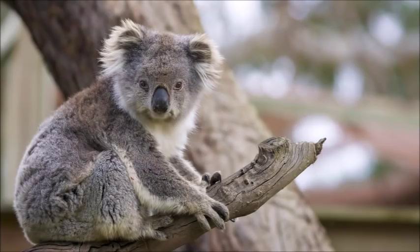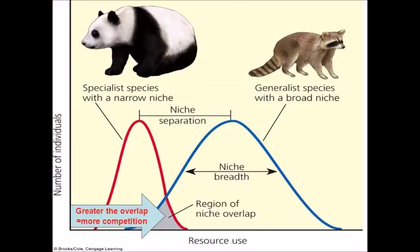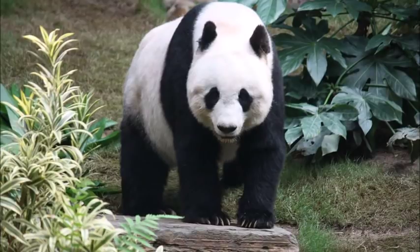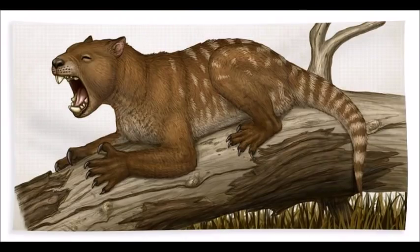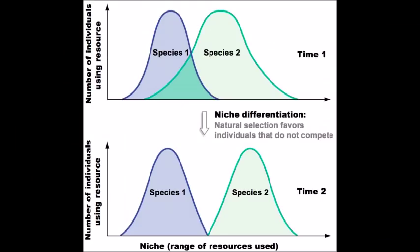There are several ways a species might respond to the competitive exclusion principle. A species might specialize into a very narrow food source that no other species can use, like koalas, which only eat eucalyptus that is toxic to everything else. Or one might generalize, like raccoons, which eat pretty much anything they can. Another way is that a species might even evolve to a niche on another trophic level — from being carnivorous to herbivorous, like the giant panda, or going from herbivory to carnivory, like thylacoleo, the marsupial lion.